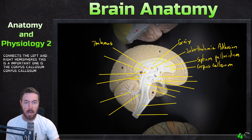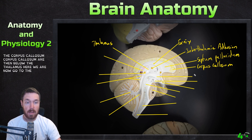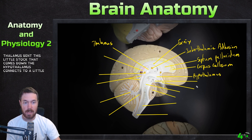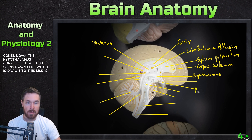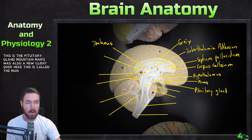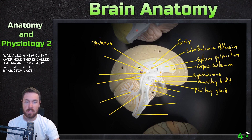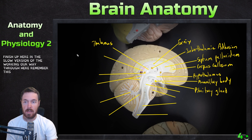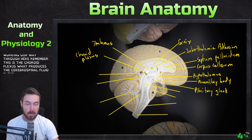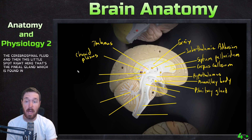Below the thalamus we have the hypothalamus. The little stalk coming down from the hypothalamus connects to the pituitary gland. There is also a nuclei over here called the mammillary body. The choroid plexus, labeled here, produces cerebrospinal fluid. And this little spot is the pineal gland, which is found in the epithalamus.